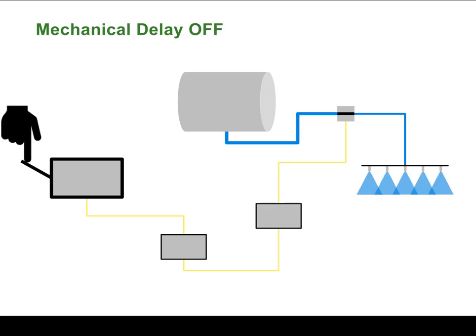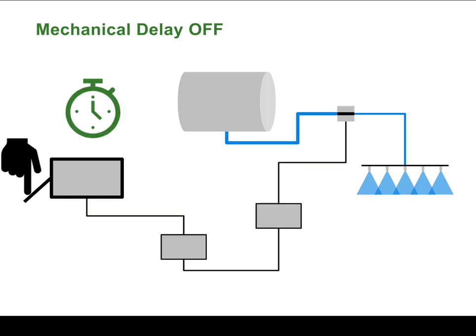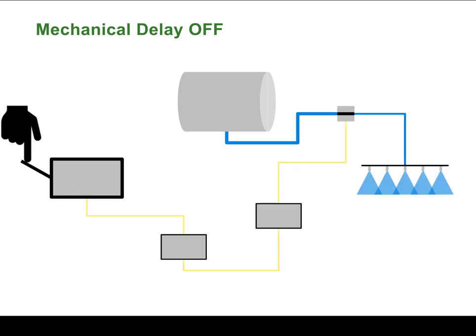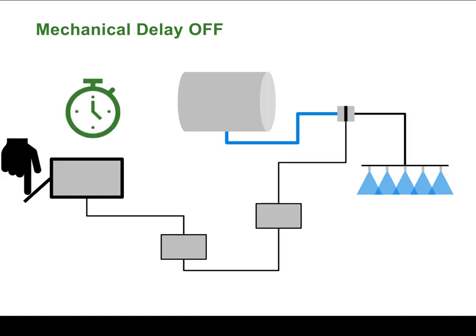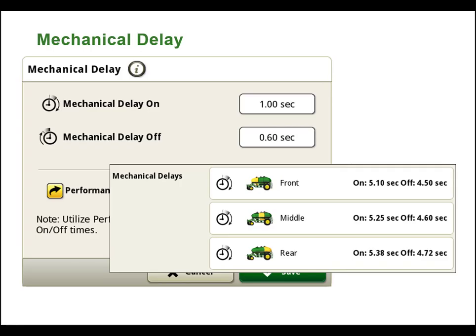Mechanical delay off time should be measured from the time that it takes to manually turn off the seed or product flow to the time when the seed or product stops being applied to the crop canopy or ground. These measured values are entered into the display in the machine or implement profile. Note that for some implements such as multi-bend air carts, the individual tanks can be measured to account for different lengths of seed or product travel time from each bin to the ground.